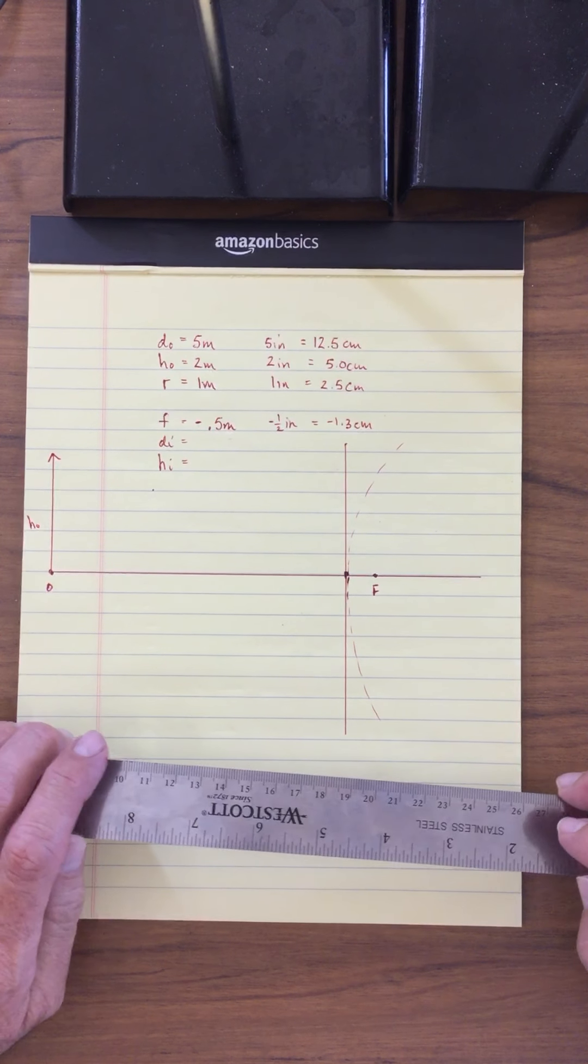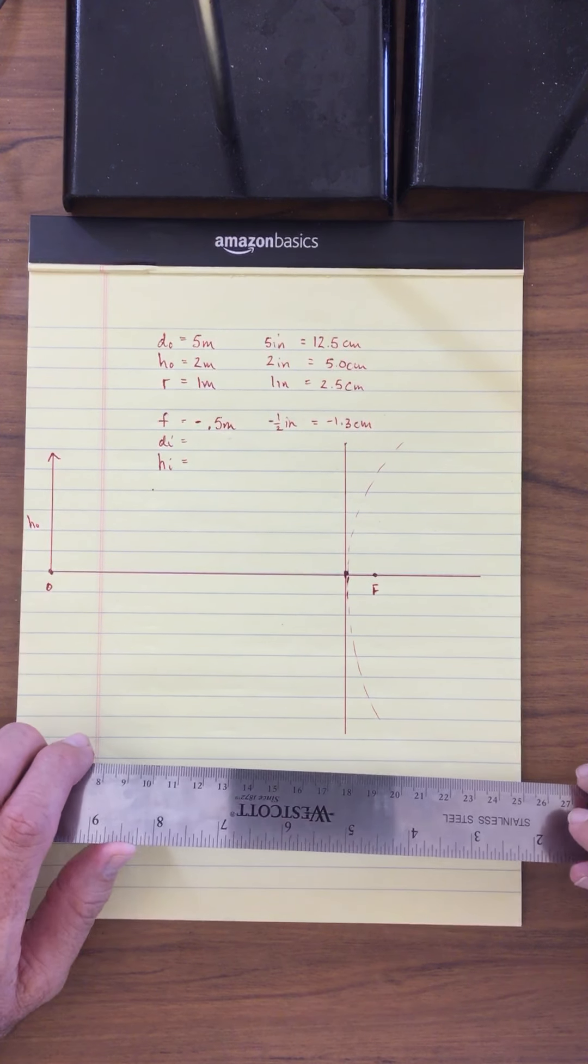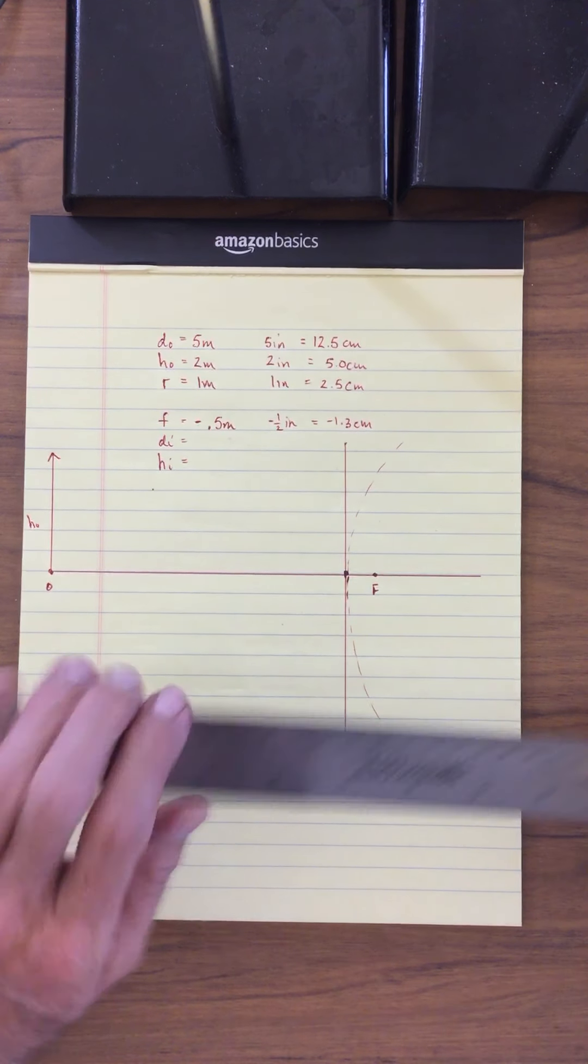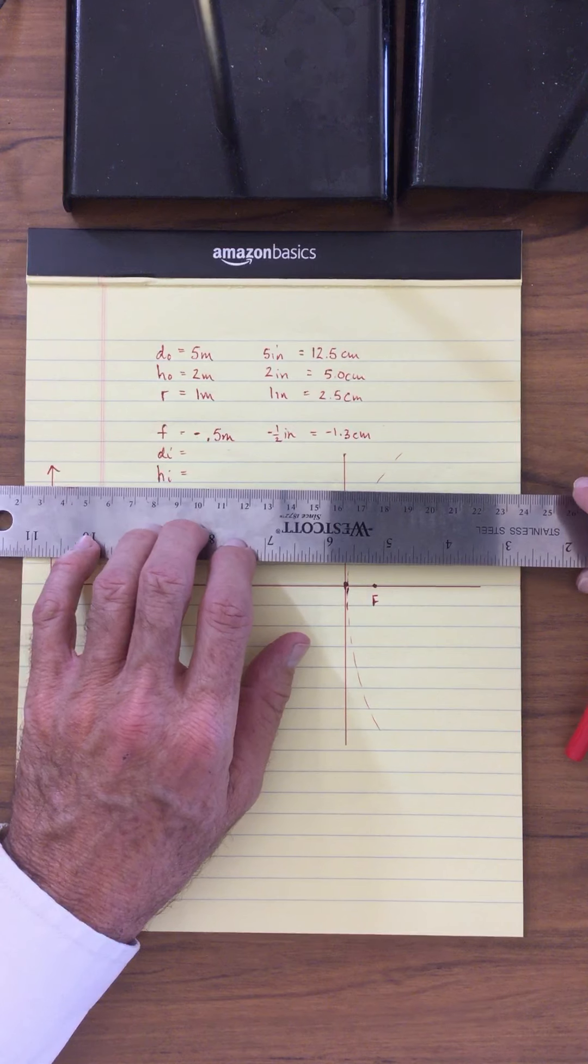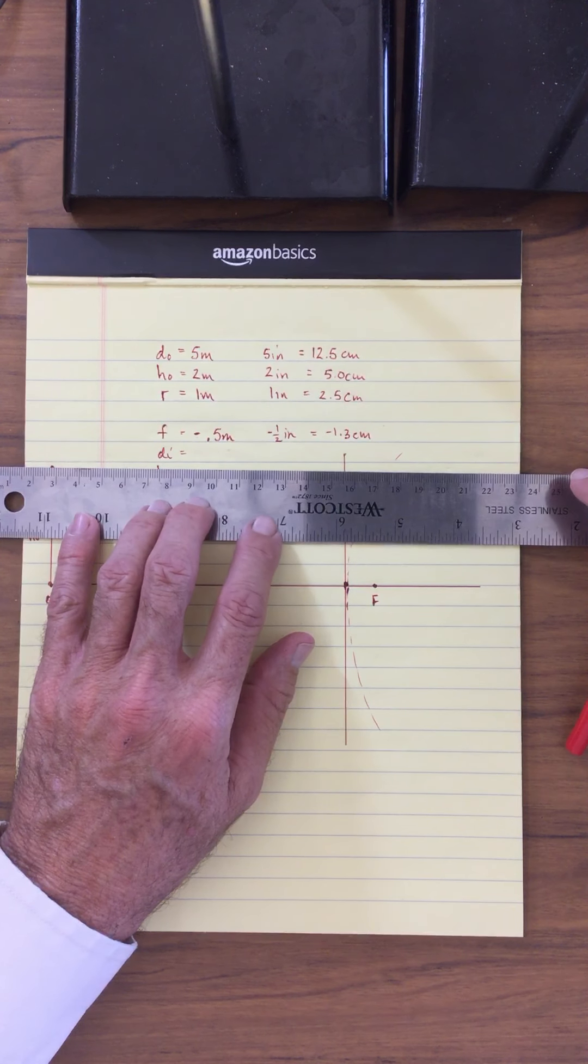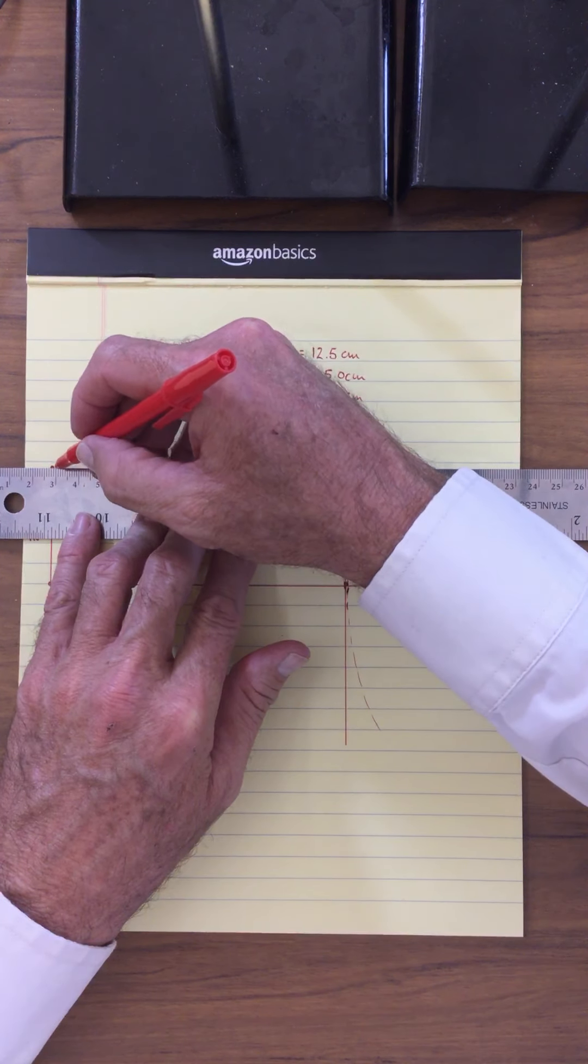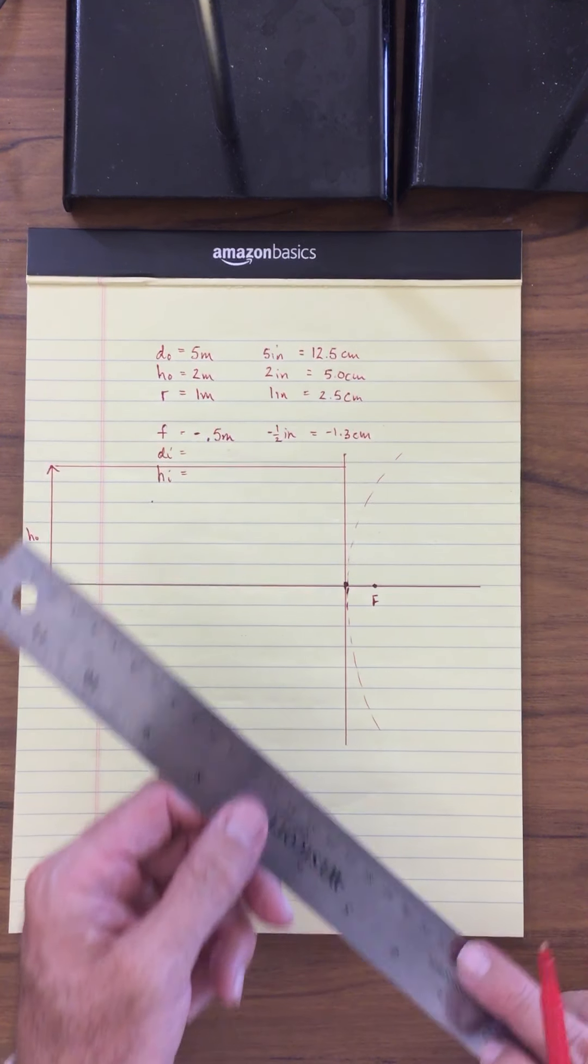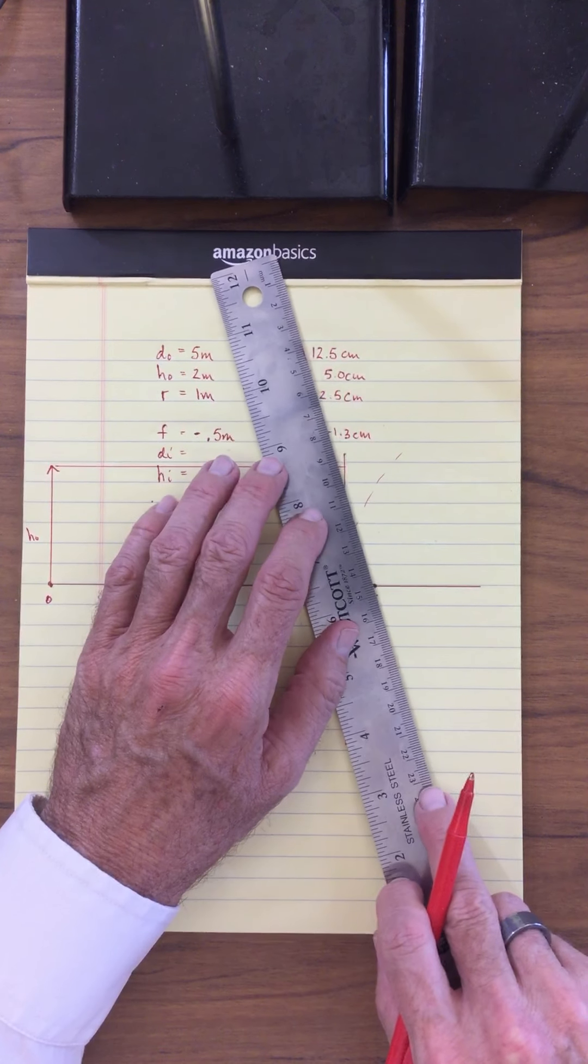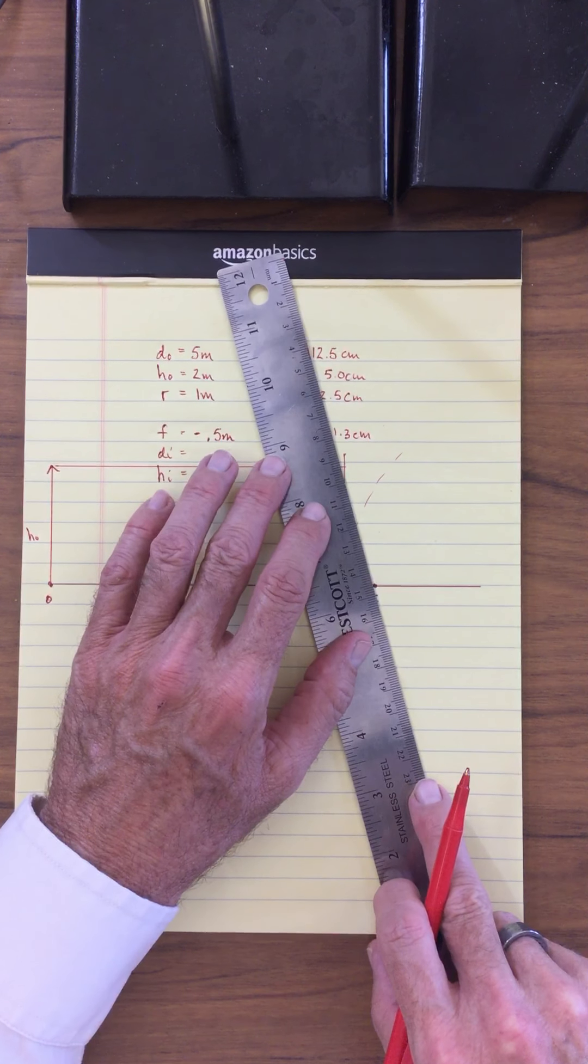I now have everything that I need to sketch this. So if you remember, the first ray is going to come in parallel to the principal axis like this, and it's going to align itself up with the focal point.